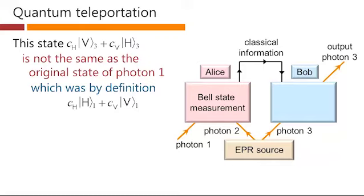That's not what we have here. We have a vertical polarization associated with this coefficient and a horizontal polarization associated with that one for this output photon 3. So as it stands at the moment, photon 3 is not in the same state as photon 1, although it does have the same coefficients involved with it that are still unknown.